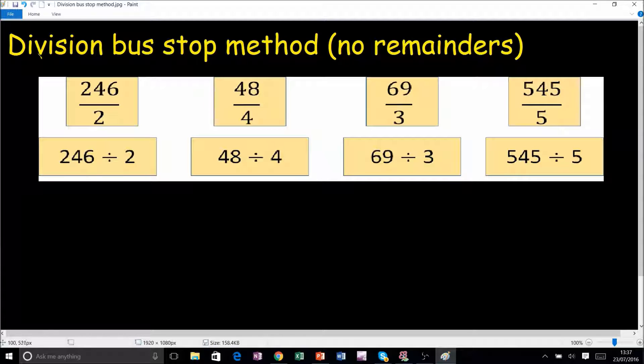So let's start. We've got 2 and 246. First thing we do is how many 2's go into 2? 1, remainder nothing. Then how many 2's go into 4? 2. And how many 2's go into 6? 3, remainder nothing. And that is our answer, 123.